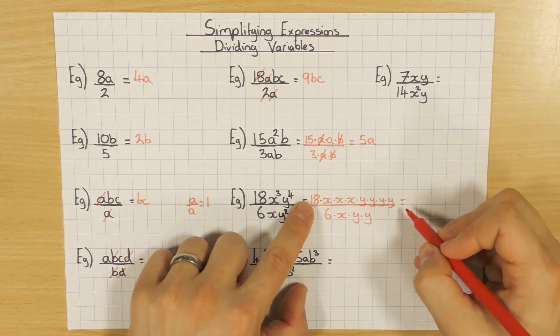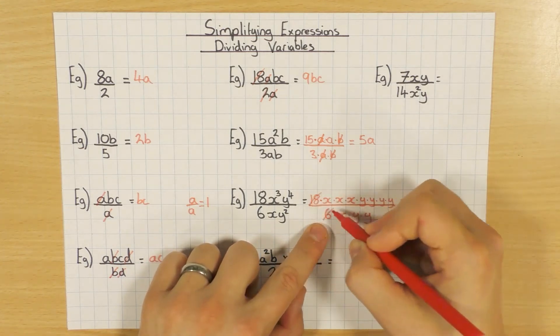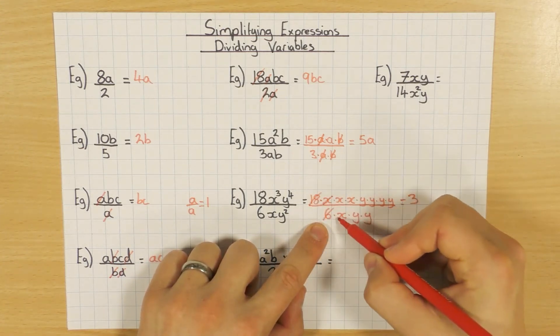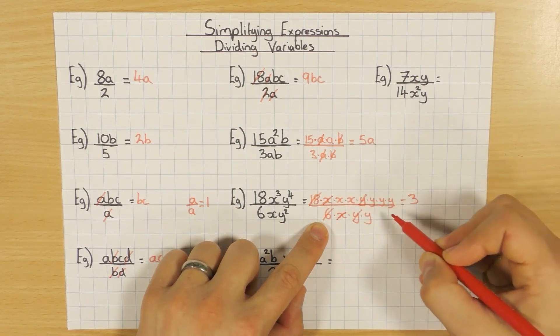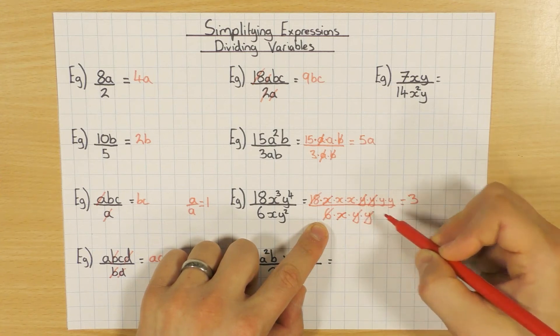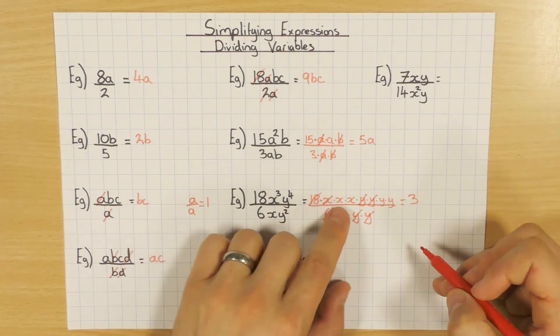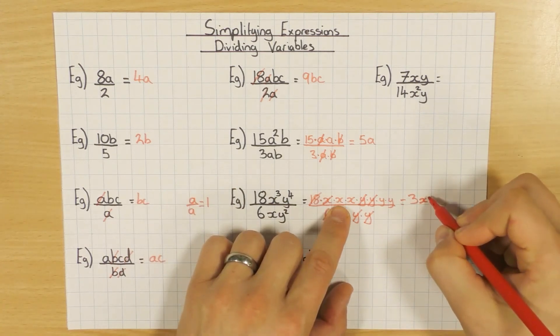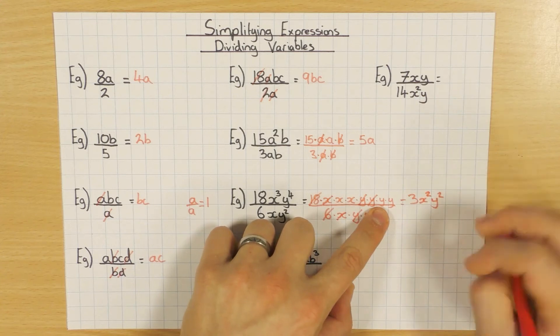Now we'll have a look. Do the numbers. 18 divided by 6 is 3. Cross them off, they're done. I've got 1x on the top, 1x on the bottom, so they cancel out. And I've got a y on top, y on the bottom, and I've got another y on top, and y on the bottom. Nothing's left on the bottom, so let's have a look. I've got left with an x times an x, which is x squared, and a y times a y, which is y squared.